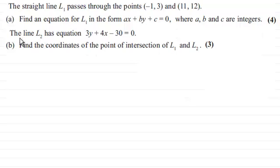And then for the second part, we're given that the line L2 has equation 3y + 4x - 30 = 0, and we've got to find the coordinates of the point of intersection of L1 and L2. So if you'd like to have a go at this, just give you a moment to pause the video.